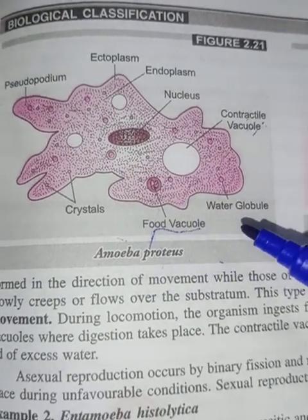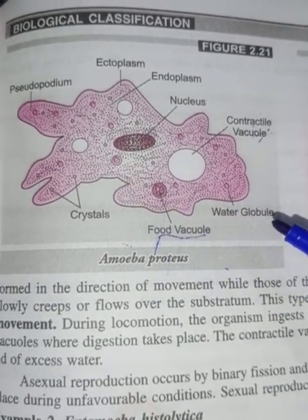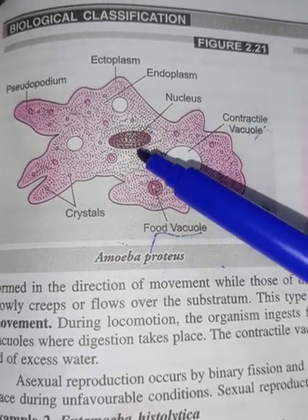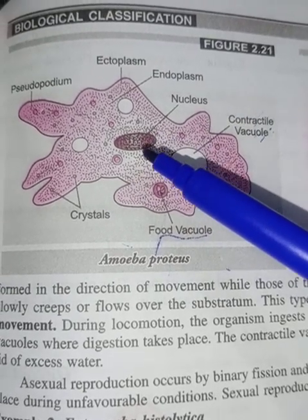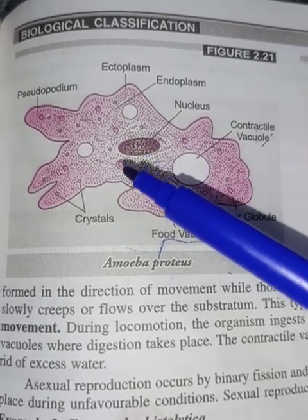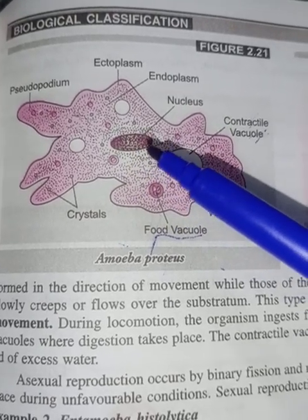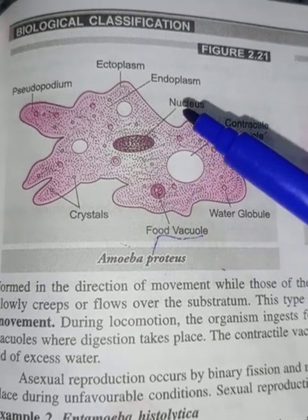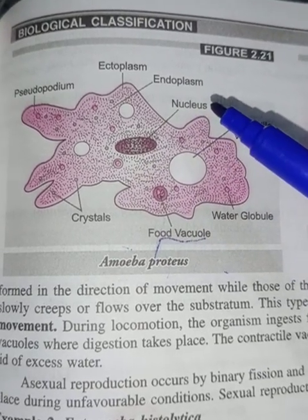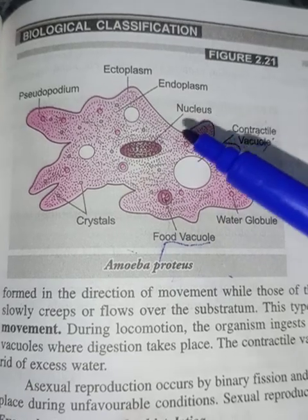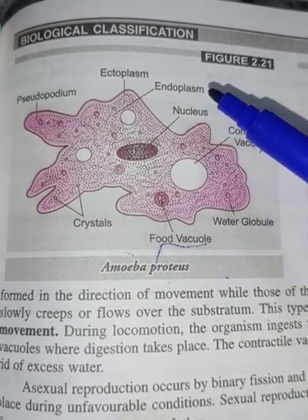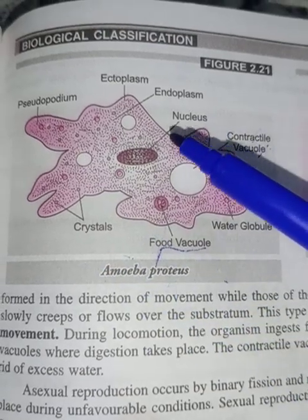The cytoplasm also includes some water globules, and a nucleus is also present. This is a true nucleus because Amoeba is a eukaryotic organism — it shows a nuclear membrane around the genetic material. Hence the nucleus here is a well-developed true nucleus, and the cytoplasm also includes different membrane-bound cell organelles.